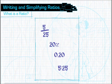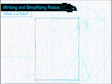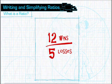Here are a couple of examples demonstrating common ratios shown as fractions. You might see ratios that indicate the number of wins divided by the number of losses. In this case, the team won twelve times and lost five times.